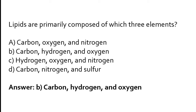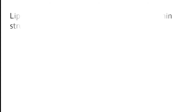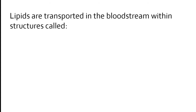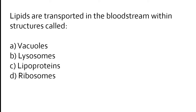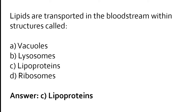The correct answer is option B: lipids are primarily composed of carbon, hydrogen, and oxygen. Lipids are transported in the bloodstream within structures called — lipid [what]? The correct answer is option C: lipids are transported in the bloodstream within structures called lipoproteins.